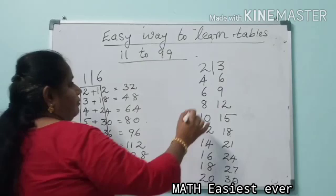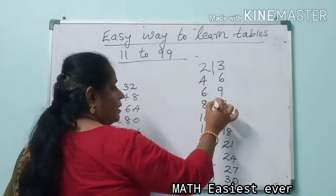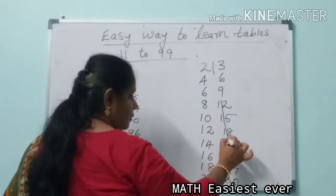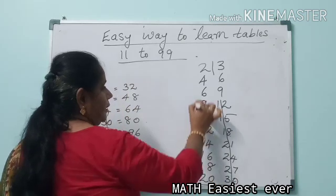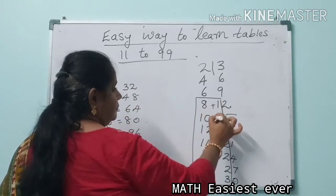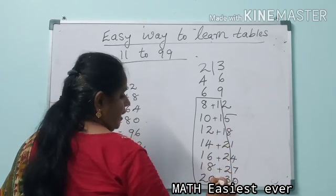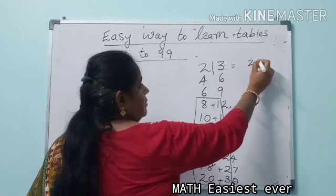Now what you have to do is, this is also ones digit and tens digit. You only have to add the tens digit to this. This tens digit should be added to this. Now what will you get? Let's check. 23 ones is 23, 23 twos are 46, 23 threes are 69.